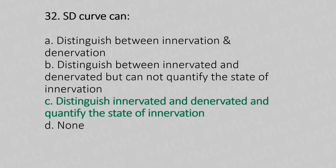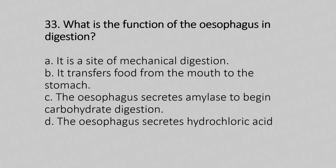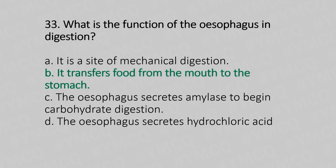Now let's move to question number 33. Which is the function of the esophagus in digestion? Option A: it is a site of mechanical digestion. Option B: it transfers food from the mouth to the stomach. Option C: the esophagus secretes amylase to begin carbohydrate digestion. Option D: the esophagus secretes hydrochloric acid. And the answer is Option B — it transfers food from the mouth to the stomach.